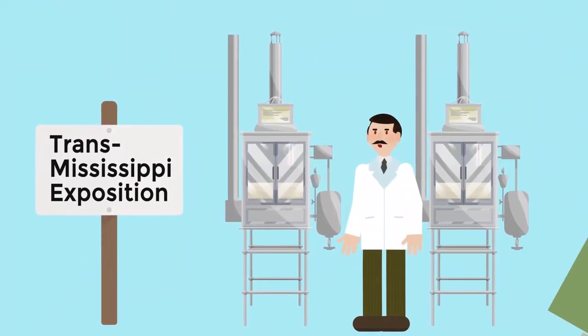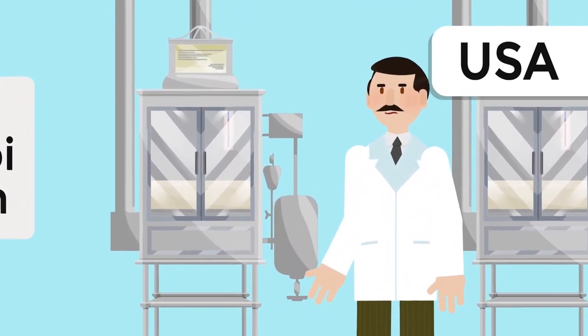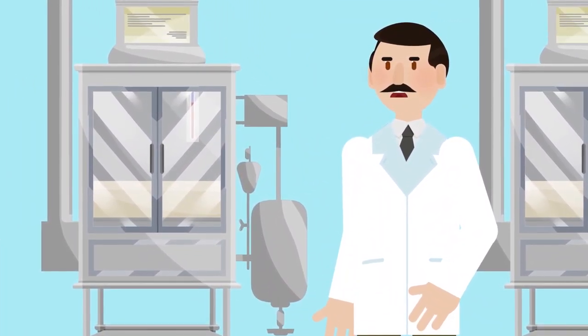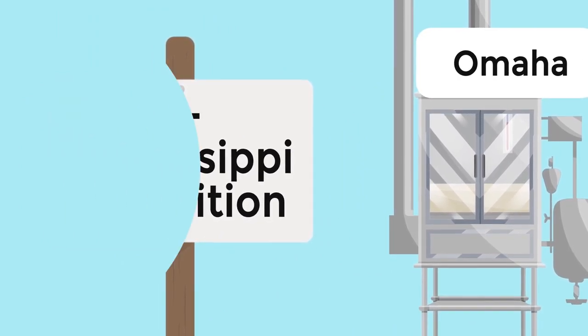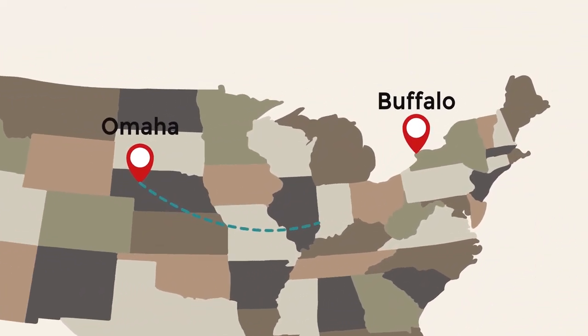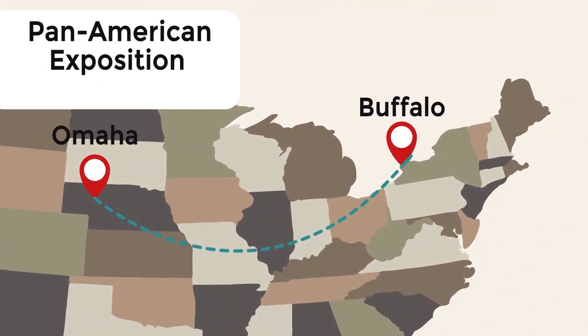After his European triumph, Cooney moved to the USA, where he demonstrated the incubators at the Trans-Mississippi Exposition in Omaha. After that, a many-state tour awaited him, including a stop at the Pan-American Exposition in Buffalo in 1901.